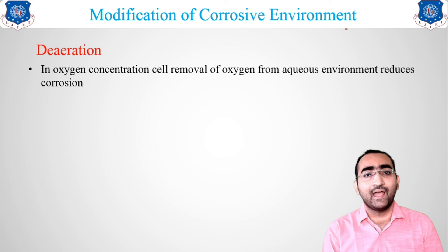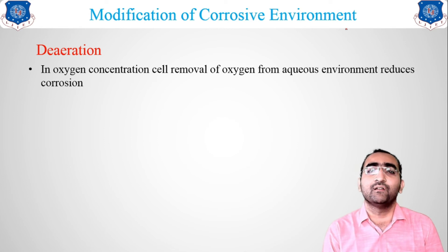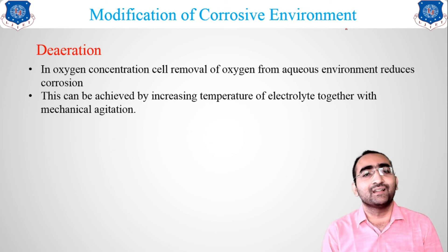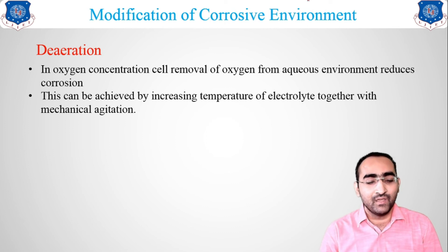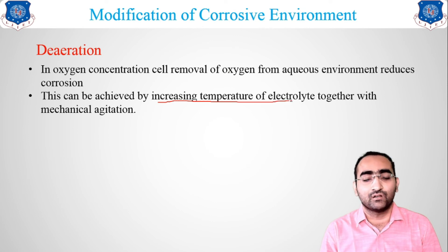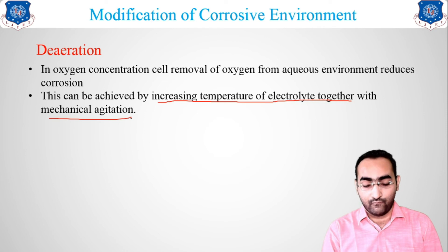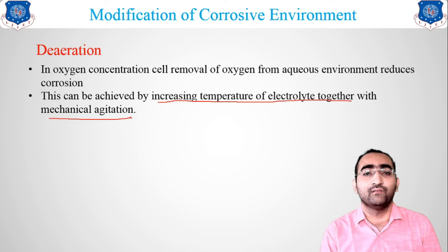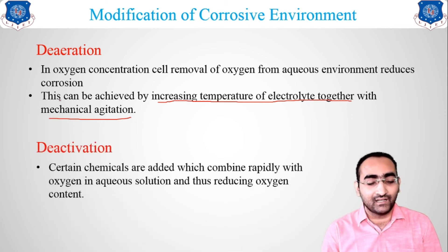The first sub-method is de-aeration. As the name suggests, you remove air or, if that is not possible, remove oxygen. With less oxygen, corrosion is reduced. Going for a vacuum also avoids corrosion. De-aeration can be achieved by increasing the temperature of the electrolyte together with mechanical agitation, which reduces oxygen reactivity so oxygen does not react with the metal and corrosion resistance improves.